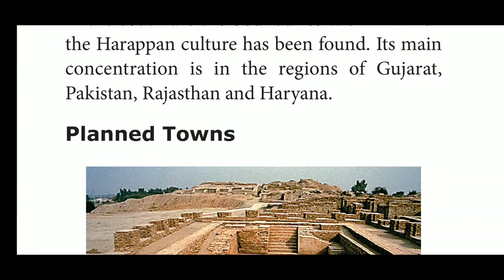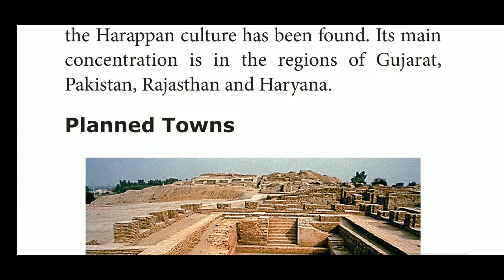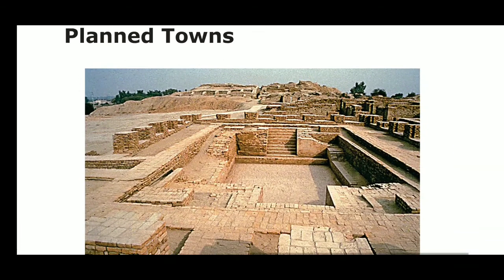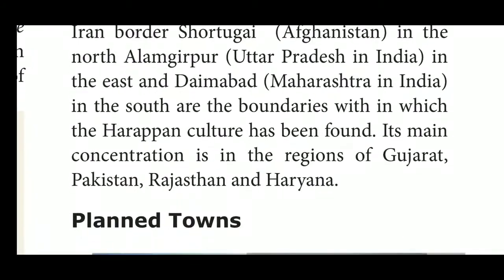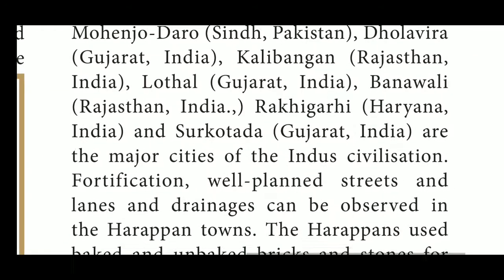Harappan civilization is located in Punjab, both Indian Punjab and near the border areas of Pakistan. Mohanjodaro is situated in Sindh, Pakistan. Dholavira is in Gujarat and Kalibangan is in Rajasthan in India. Lothal is the largest site and is situated in Gujarat.